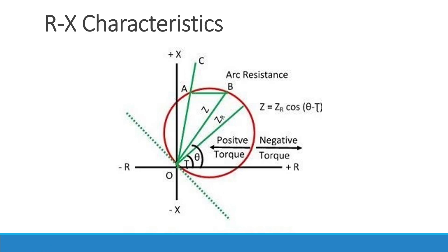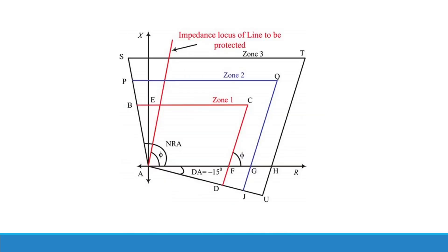In modern relays you have Mho elements as well as quadrilateral elements. Quadrilateral elements are developed in numerical relays where you can draw the characteristic by hand or by using other equations. I will not go into detail regarding quadrilateral elements, but these are available in modern numerical relays and we will see this type of quadrilateral elements while using ETAP.